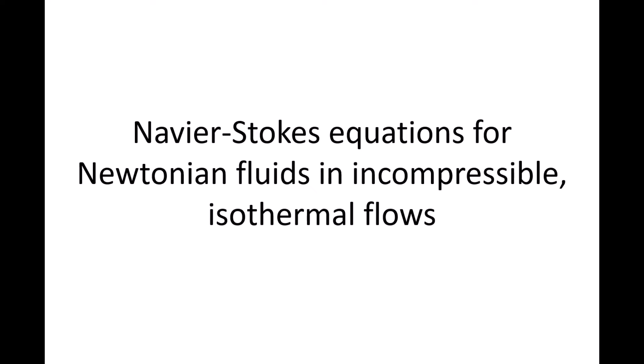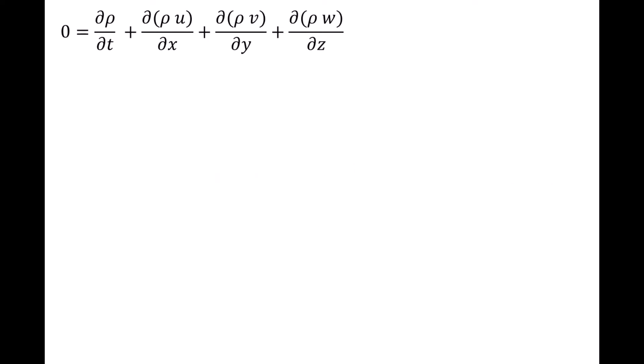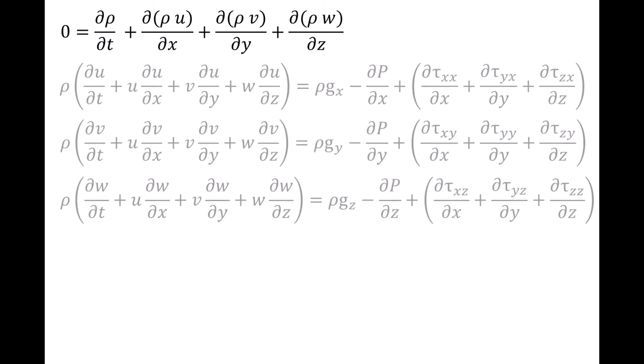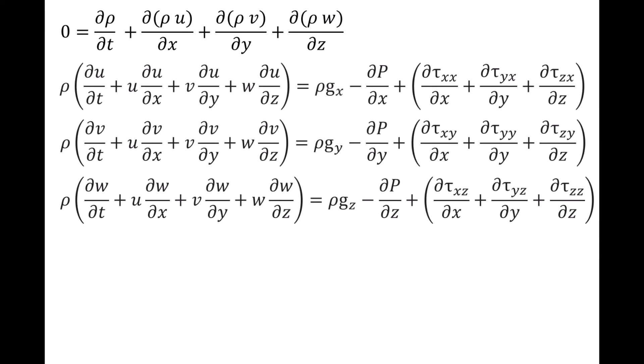In this lesson, we will derive a form of the Navier-Stokes equations that is valid for Newtonian fluids in an incompressible isothermal flow. In prior videos, we derived the differential form of the conservation of mass equation for a control volume, also called the continuity equation, as well as the three conservation of linear momentum equations for a control volume, also called the Navier-Stokes equations.